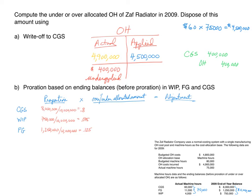We use these proportions to allocate the under-applied amount of $400,000, spreading it across the three T-accounts. The amount allocated to cost of goods sold is $320,000 — the majority. The amount allocated to work in process is $30,000, and the amount allocated to finished goods is $50,000. These should add up to the $400,000 being allocated.